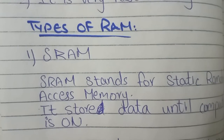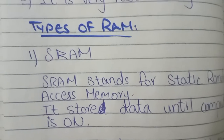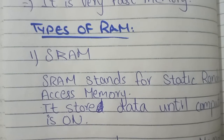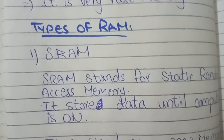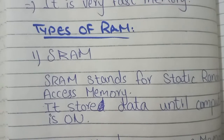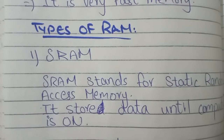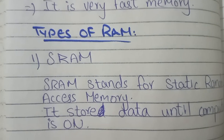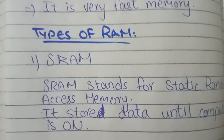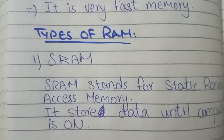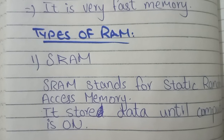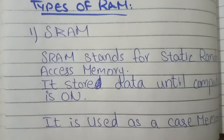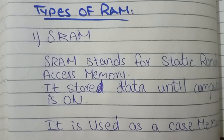SRAM stands for Static Random Access Memory. It stores data as long as the computer is on. We use Static Random Access Memory because we don't need to refresh it every time. SRAM is used as cache memory.